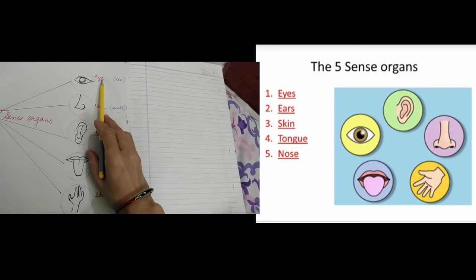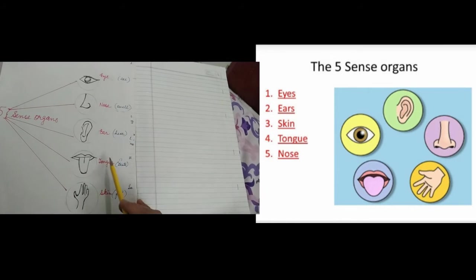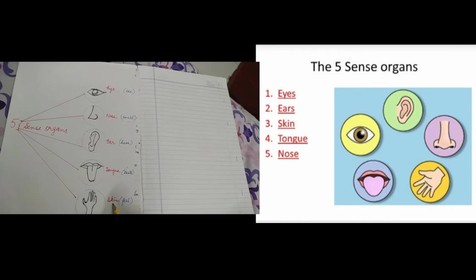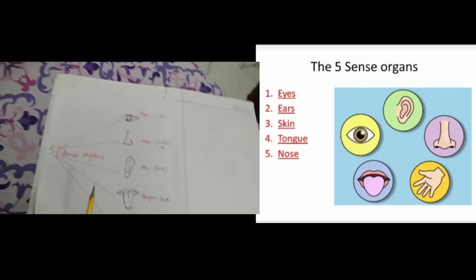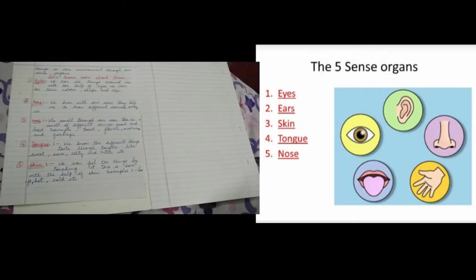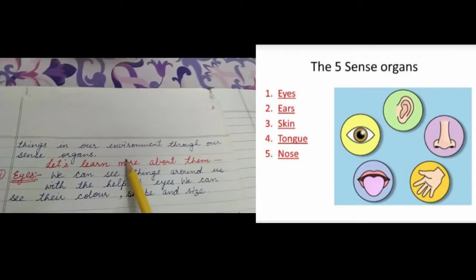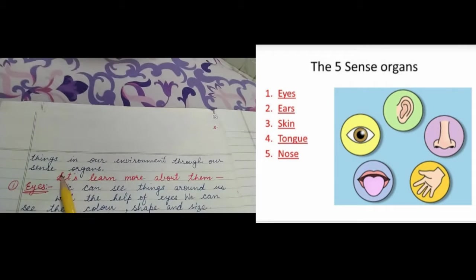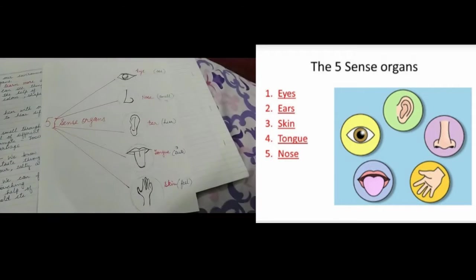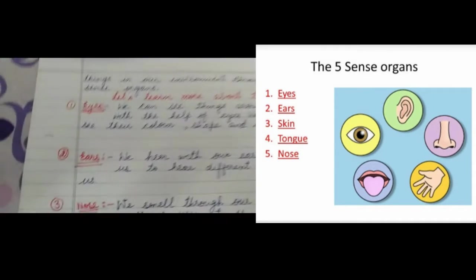The five sense organs are: first, eye; second, nose; third, ear; fourth, tongue; and fifth, skin. You will get a lot of information about various things in your environment through your sense organs. Now let's learn more about them one by one.